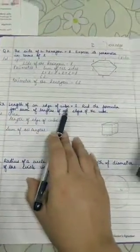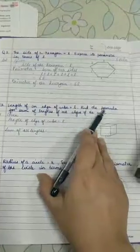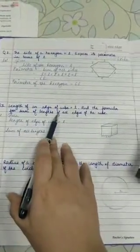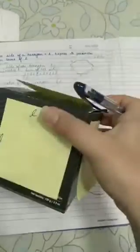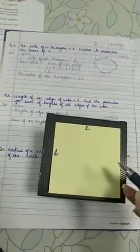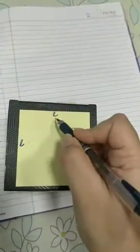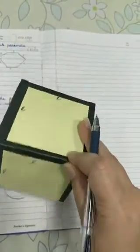Now next question, length of an edge of a cube is L. Find the formula for sum of all the length of all the edges. Now here I have made a cube. And sum of all the edges. If we have to take, then per side, we will take 2 lengths. Because here will be counted, and here it is the same.